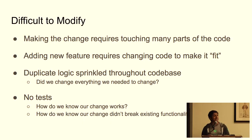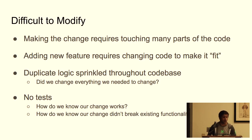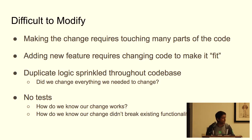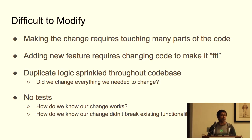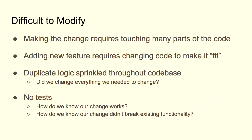What does it mean to have code that's difficult to modify? It means that when you're making a change, you're going to touch many different parts of the code base. You might have to modify code you've already written. Code that's difficult to modify also has duplicate logic sprinkled throughout. When we're making a change, do we know we changed every single part we're supposed to? And if we have no tests, code is really difficult to modify — we have no idea if our change broke existing functionality.